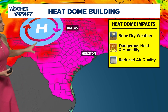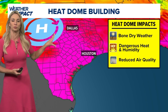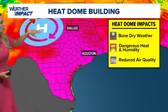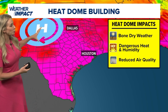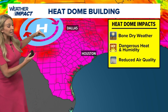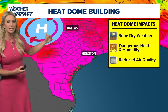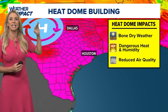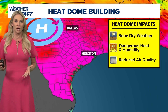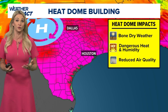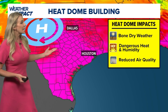Typically, it's all thanks to an area of high pressure. Think of high pressure living in the upper levels of the atmosphere. As high pressure continues to grow and expand, it becomes a heat dome — basically blocking out the chance for rain, which would of course cool us down.